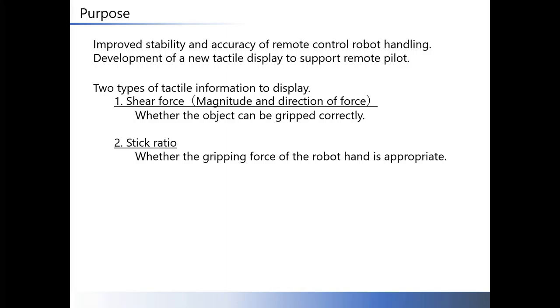Two types of tactile information to display. The first is shear force. By displaying the shear force, the operator knows the direction and magnitude of the force. The second is stick ratio. By displaying the stick ratio, the operator knows the gripping force of the robot hand is appropriate to hold the object.